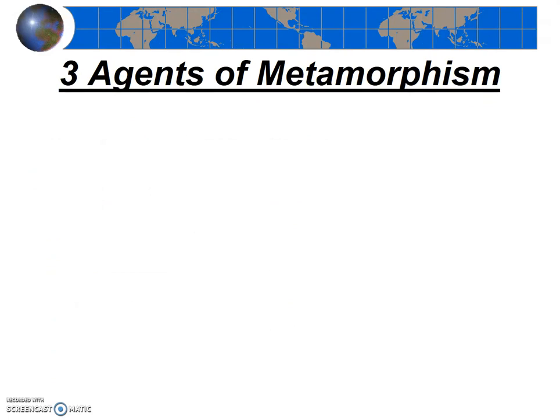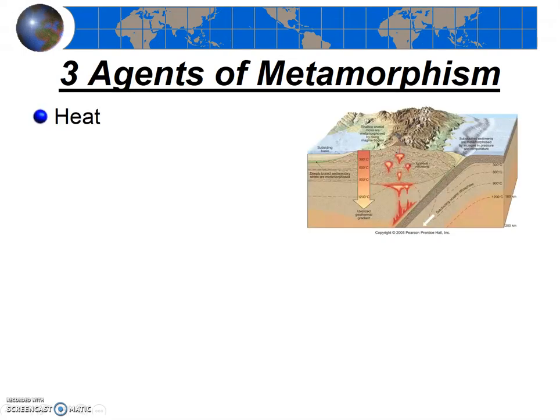What causes metamorphism? We said that high temperatures and pressures cause metamorphism. This is essentially true, but we're going to list three agents of metamorphism — three causes. The first and most important is definitely heat. That heat can come from deep burial, because as you go deeper in the Earth it's hotter. That can cause metamorphism, or it can be the heat associated with being somewhere nearby a magma chamber.